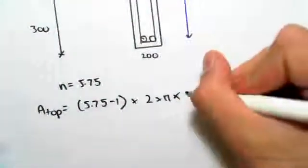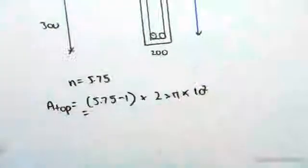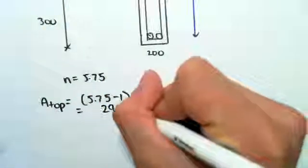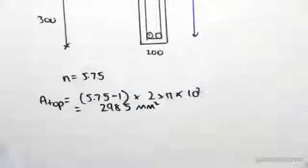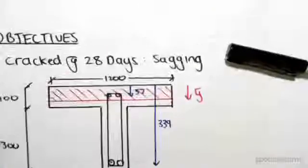So we're timesing by 10 squared. If you were to work this out we would get 2985 millimeters squared. So the area of our top bars over here.